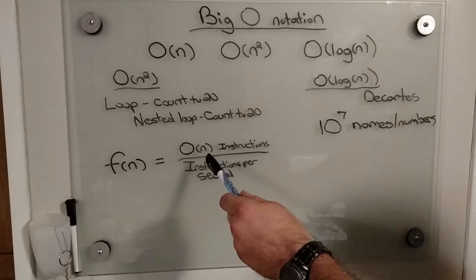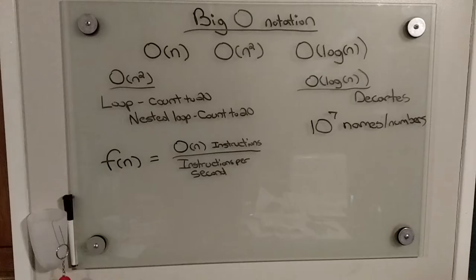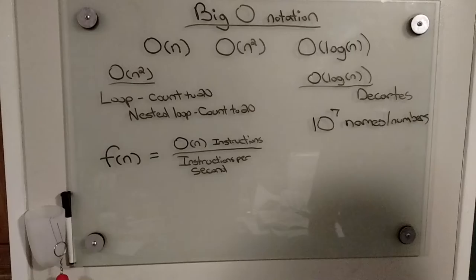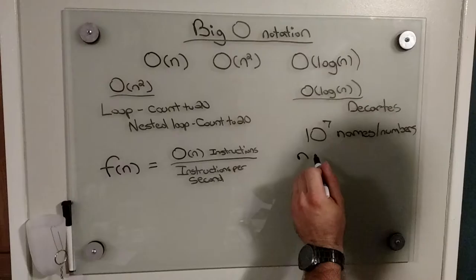And so what happens when we're dealing with very large data sets like this? This is exactly what we're going to find out with our equation here. Our function deals with O(n) set of instructions. This is the number of instructions that we're dealing with, whether it be O(n), O(n²), or O(log n) divided by the amount of instructions per second that the computer you're dealing with is capable of.